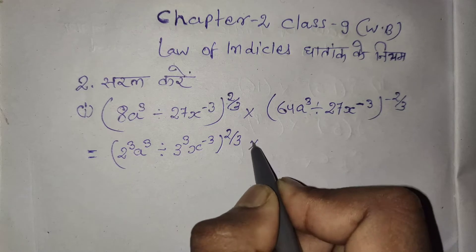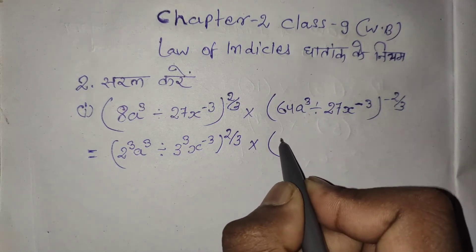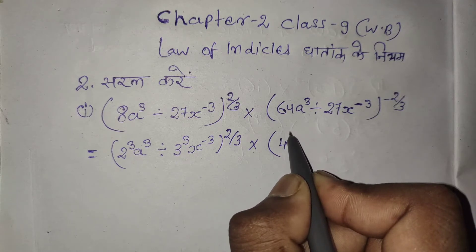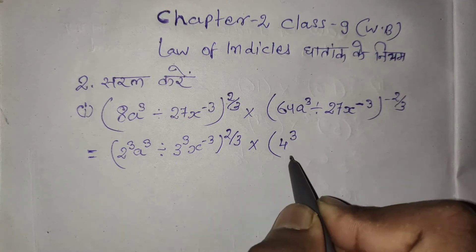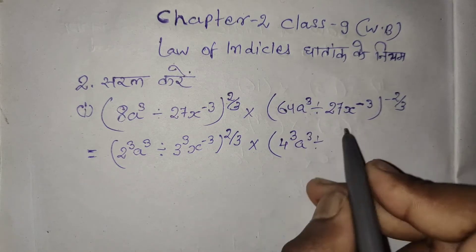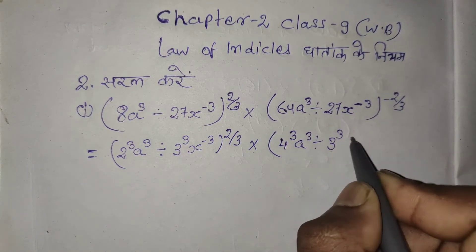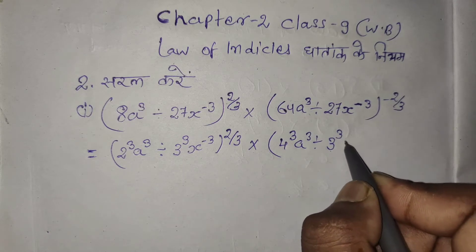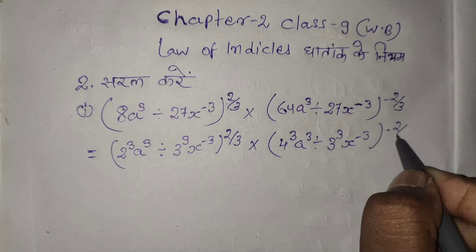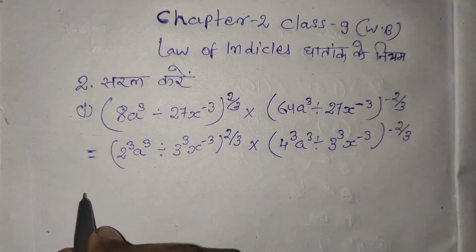We have 2/3 into 2³. How do we write 4? We write 4 as 4 — sorry, a power 3 divided by 3. Here, 3 power 3. So we get 2 by 3, then 1 by 3.